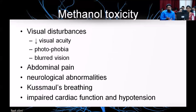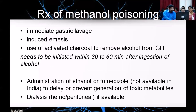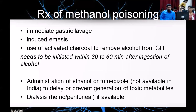Something not often seen but possible is methanol toxicity. It is usually characterized by visual disturbances and abdominal pain. In certain cases there are neurological abnormalities, Kussmaul's breathing, impaired cardiac function, and hypertension. Around 37 to 72% of patients will have both visual disturbances and abdominal pain. Unfortunately not too much can be done in a psychiatric setup. What needs to be done is immediate gastric lavage or emesis, or use of activated charcoal within 30 to 60 minutes. Fomepizole is not available in India. Ethanol could be administered. Dialysis is important if none of these are available. A multi-specialty setting with such facilities is important for methanol poisoning.